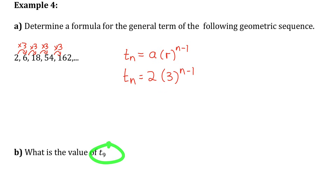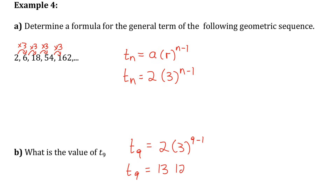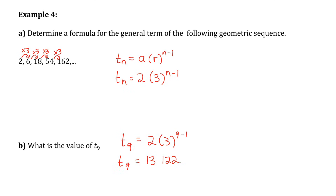Let's use that formula in part B to find the value of the ninth term. For term 9, I take my first term 2 and multiply it by 3 eight times (nine minus one). Evaluating this — be careful to follow the correct order of operations: evaluate the power first, 3 to the power of 8, then multiply that answer by 2. Term 9 equals 13,122.